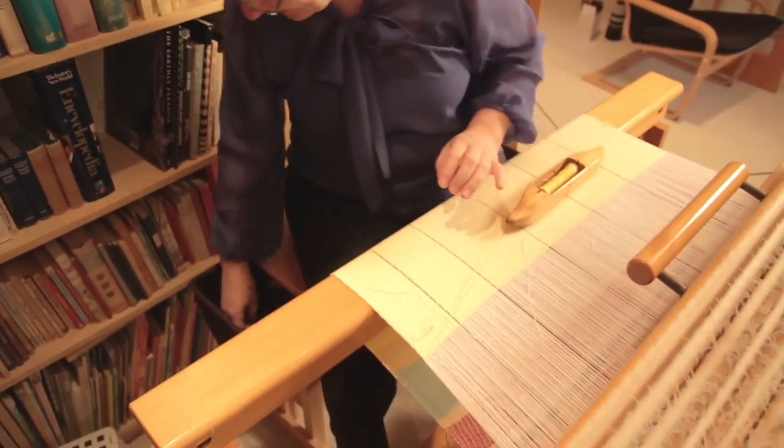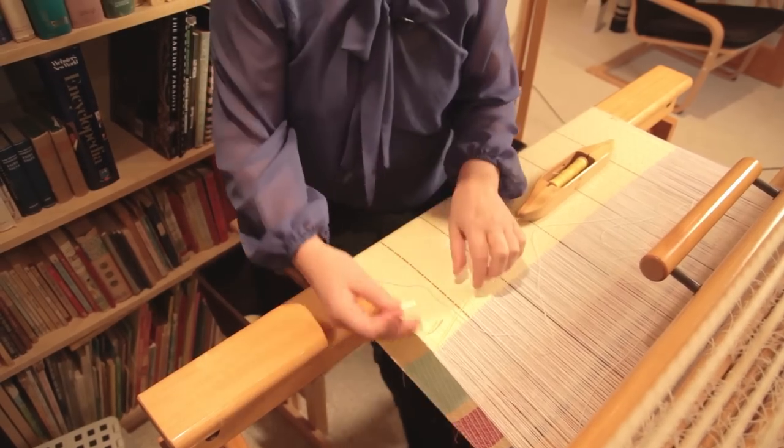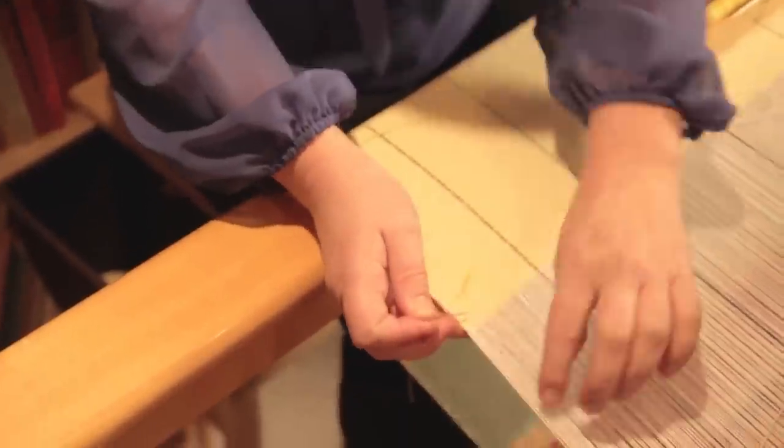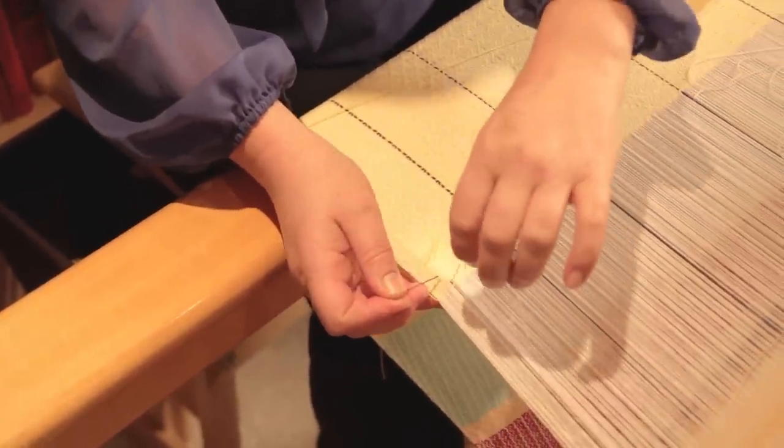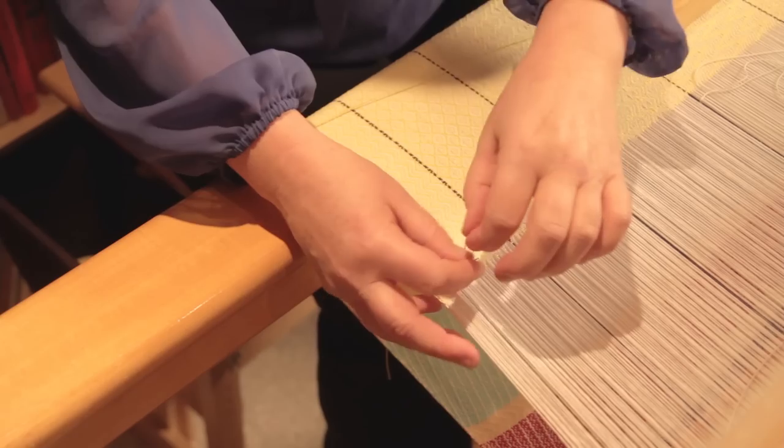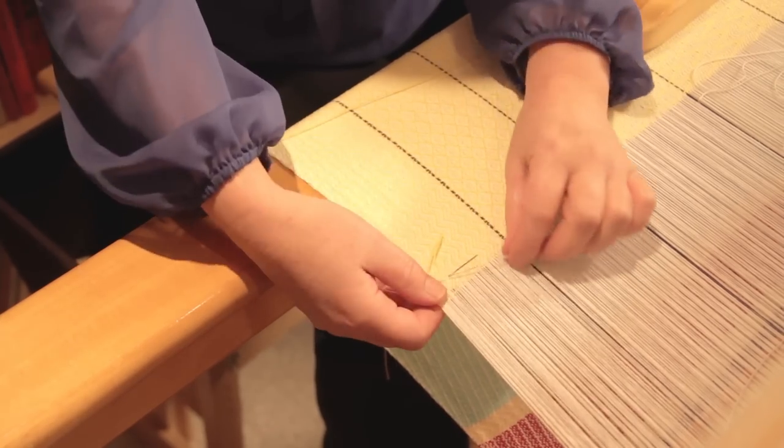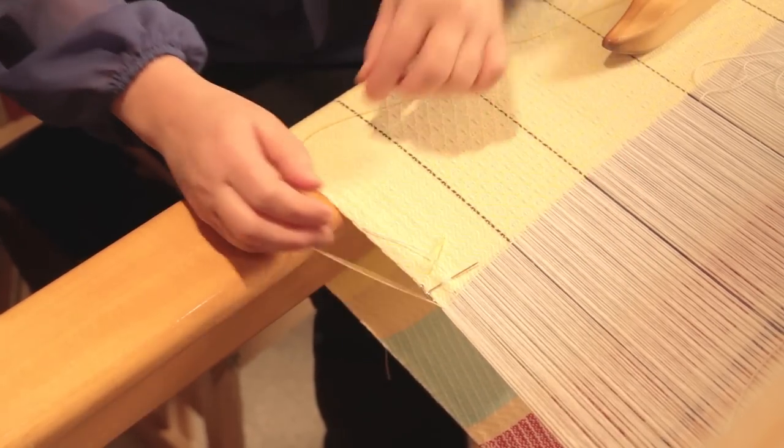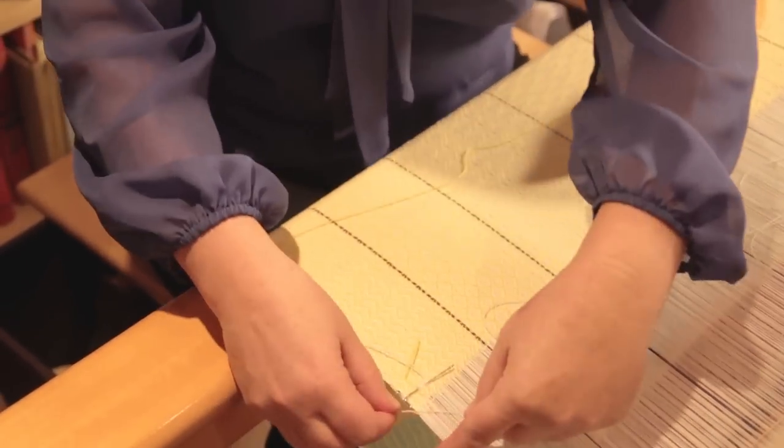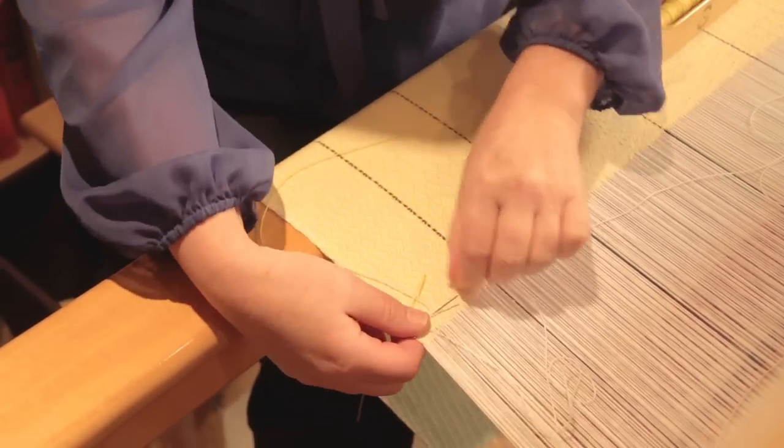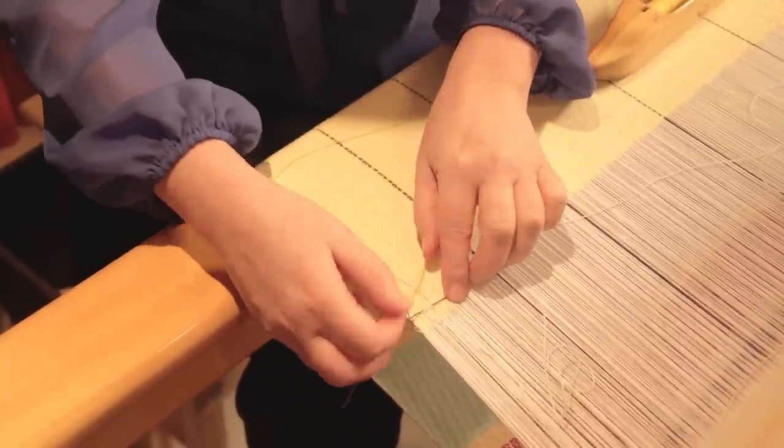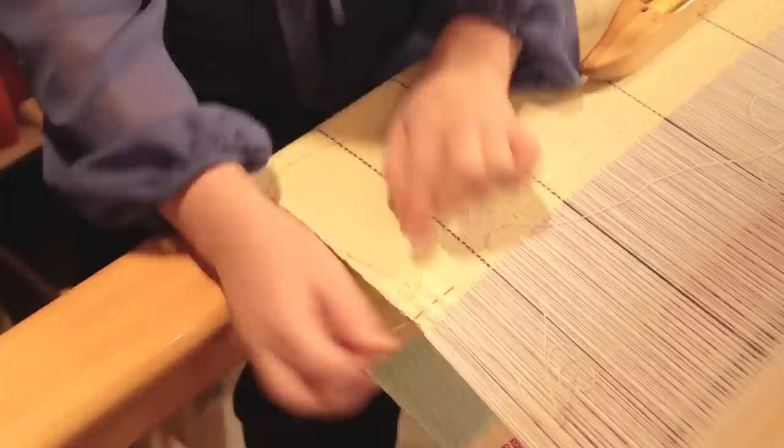I'm going to take the other end and grab a T-pin. I'm going to pin in the same location as where the warp thread is, a little further down. Just put my T-pin in there, and I'm going to wind the cut end around the T-pin several times in a figure eight. I'm also going to take the other warp end of my replacement thread and wind it around several times in a figure eight, and then I'm just going to secure the pin.